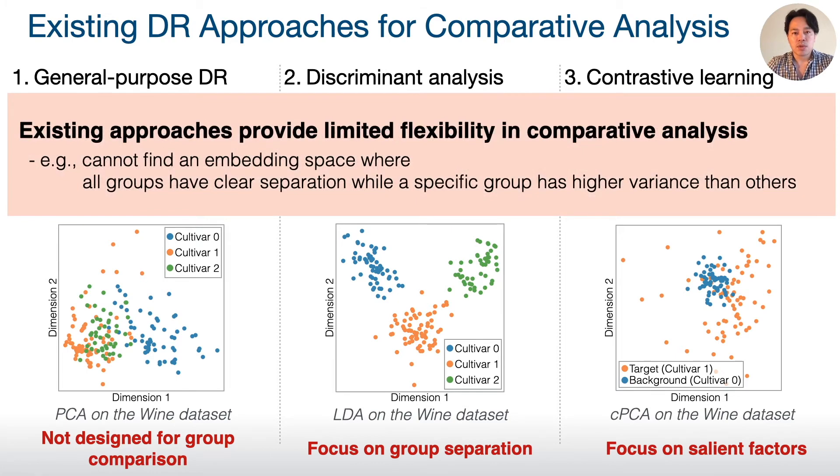But these approaches have limited flexibility in comparative analysis. For example, we cannot identify an embedding space where all groups have clear separation, but a specific group has higher variance than the others.